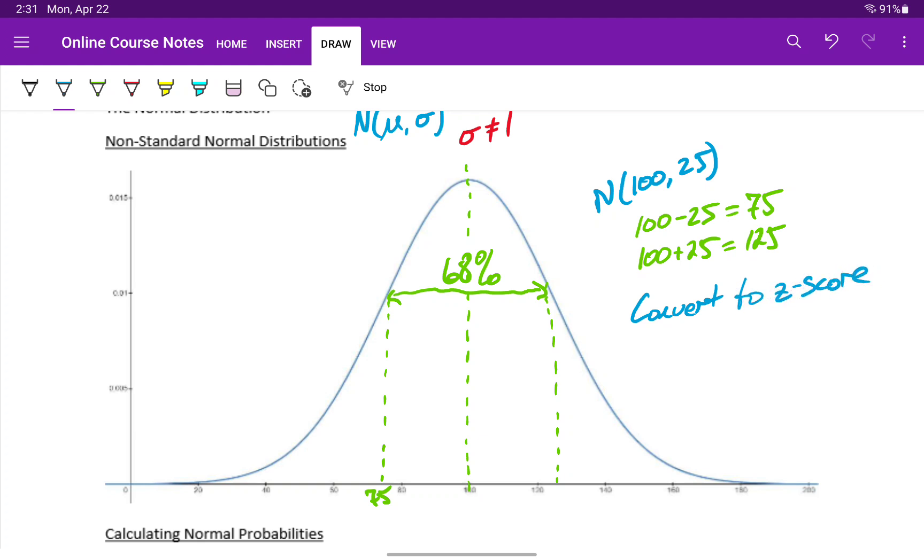Converting values to a z-score means we're converting everything to a standard normal distribution. The formula is to take your data value, subtract the mean, and then divide by the standard deviation.